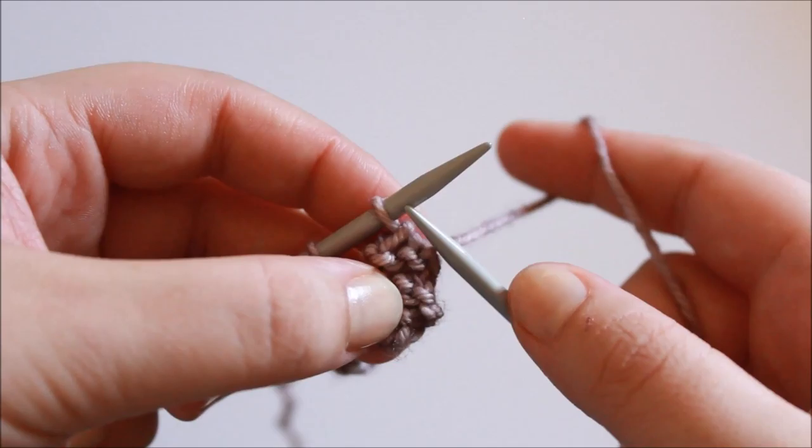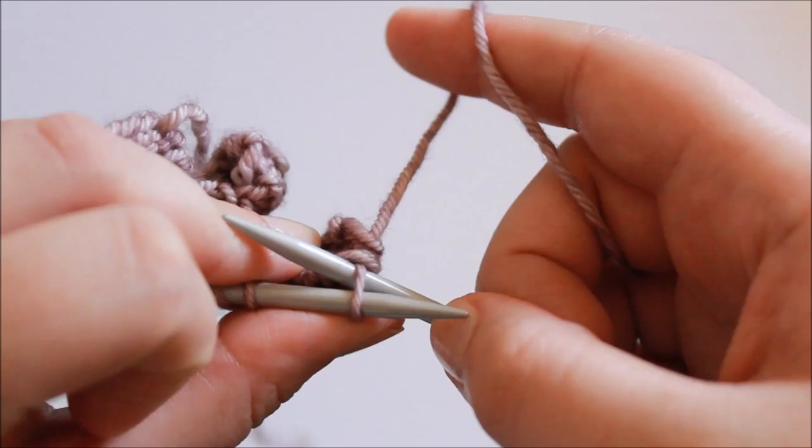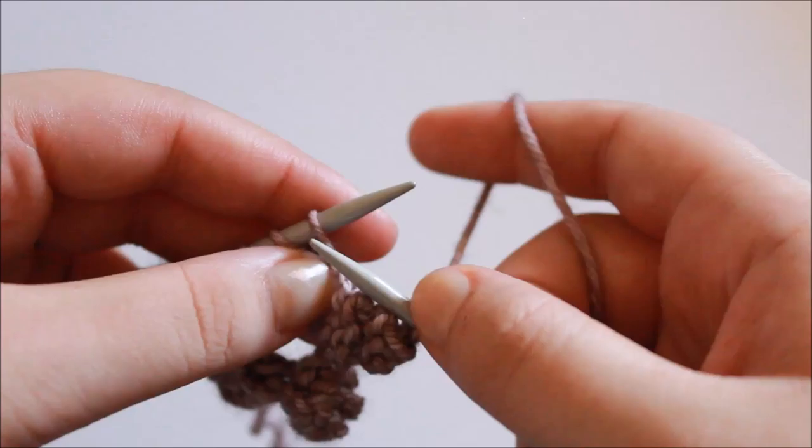The last thing we need to do is knit the first stitch through the back loop. So this side would be the front loop of our stitches, making this side the back loop. I insert my right hand needle into this back loop and knit the stitch, which twists it.